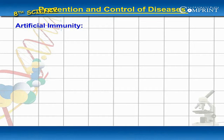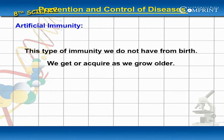Artificial Immunity: This type of immunity we do not have from birth. We get or acquire it as we grow older.